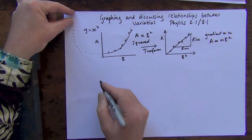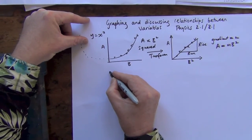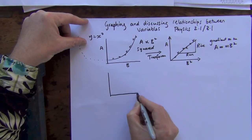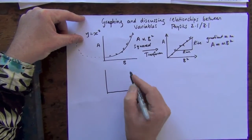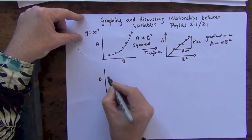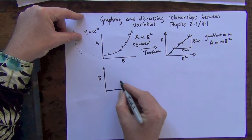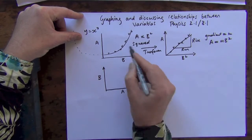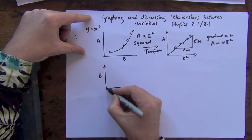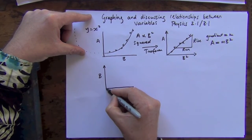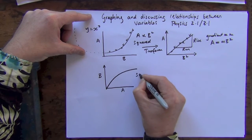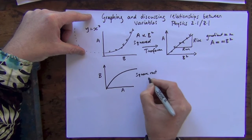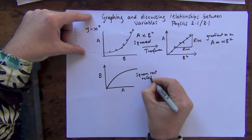Now, another example, another type of relationship that we might see. If we say we took the same data from A and B, but we plotted B on this axis, on the y axis, and A on this axis, using the same data, we would get a similar looking graph, but it would be on its side. So we call this a square root graph. And this is a square root relationship.